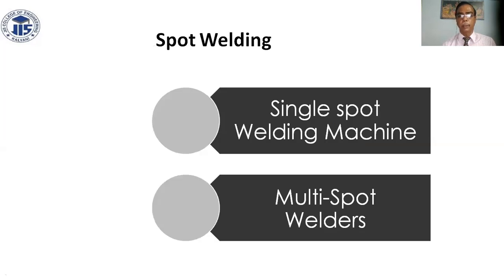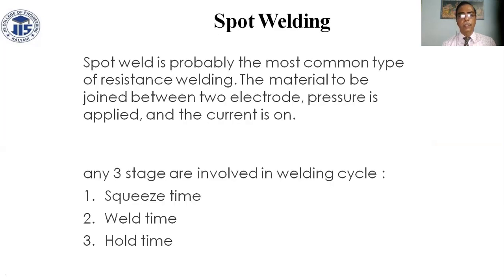There are single spot welding and multi-spot welders. Spot welding is probably the most common type of resistance welding. The material to be joined is placed between two electrodes, pressure is applied and current is turned on. Three stages are involved in the welding cycle: squeeze time, weld time, and hold time.